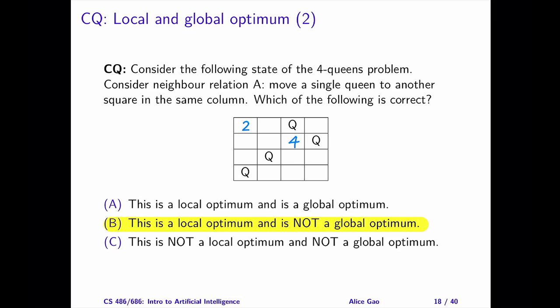Let's calculate the costs of all the neighbors. The current state has a cost of 2, and every neighbor's cost is 2 or more. Therefore, the current state is a local optimum.